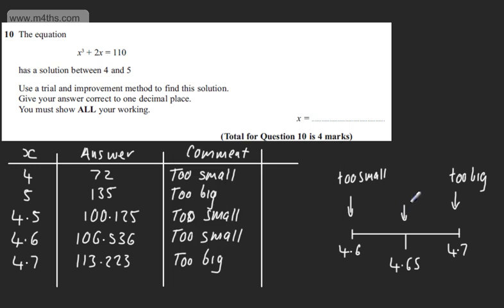So let's put this in. So that's going to be 109.8 dot dot dot. Now we can say this is too small. So it's still too small. And therefore we can see that it's going to round to 4.7.